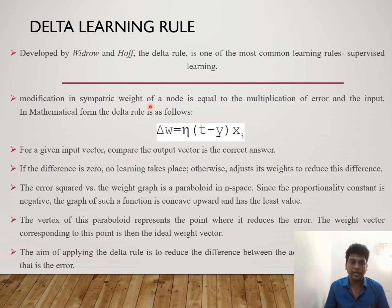Delta learning rule is defined by Widrow and Hoff. Here we equate that value to the multiplication of error and input with the learning rate. If the difference is zero, no learning takes place; otherwise we adjust the weights to reduce the difference.